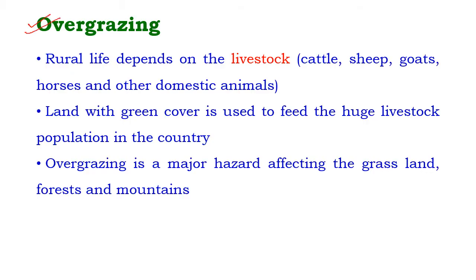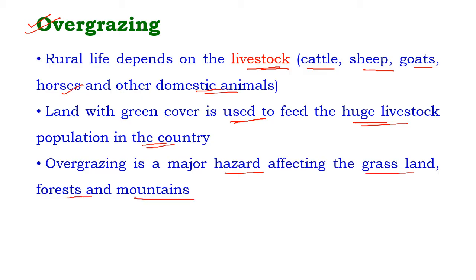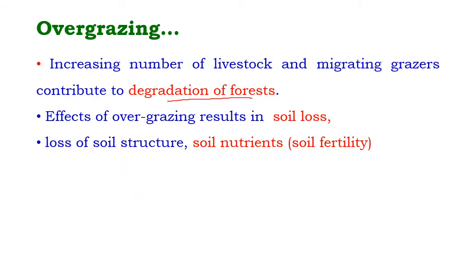Changes caused by agriculture and overgrazing: in India, rural life depends on livestock — cattle, sheep, goats, horses, and other domestic animals. Land with green cover is generally used to feed these livestock. This huge livestock population makes overgrazing unavoidable, and overgrazing is a major hazard affecting grasslands, forests, and mountains in the country.